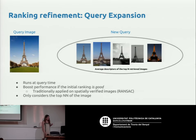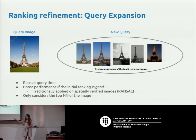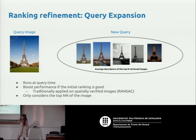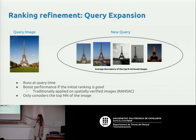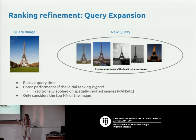Once you have your ranking list — this isn't deep learning, just a useful trick — one very simple thing you can do is take the descriptors of the top retrieved results, average them, and issue a new query. This query expansion really works well, especially if your initial results are somewhat noisy but not completely wrong. It gives you a big boost in performance.